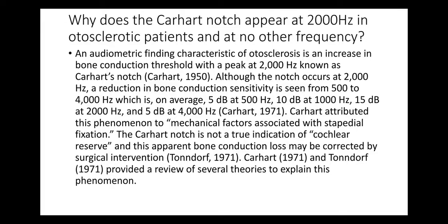Why does the Carhartt's notch appear at 2000 hertz? An audiometric finding characteristic of otosclerosis is an increase in bone conduction threshold with a peak at 2000 hertz called the Carhartt's notch, published by Carhartt in 1950. Although the notch occurs at 2000 hertz, a reduction in bone conduction sensitivity is seen from 500 to 4000 Hz: on average 5 dB at 500, 10 dB at 1000, 15 dB at 2000, and 5 dB at 4000. The maximum loss of 15 dB at 2000 hertz is classic in otosclerosis. Carhartt attributed this to mechanical factors associated with stapedial fixation. The Carhartt notch is not a true indication of cochlear reserve and this apparent bone conduction loss may be corrected by surgical intervention.